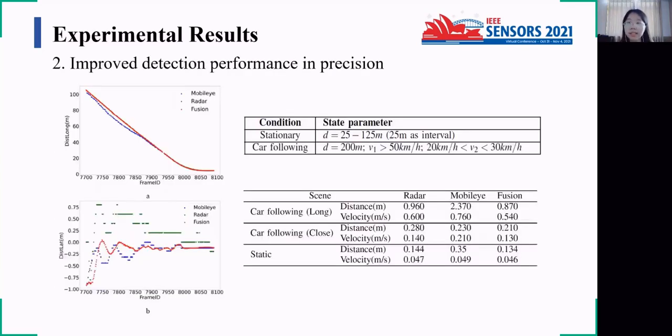As we can see here on this chart, experimental scenes include car following and stationary scenarios. The initial distance between the main vehicle and the target vehicle is 200 meters. When these two vehicles start to move, the speed of the main vehicle is increased to about 50 kilometers per hour and the other is stabilized to 20 to 30 kilometers per hour.